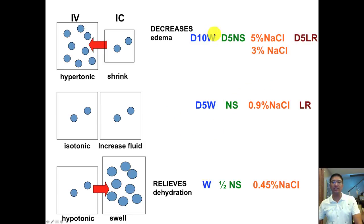If we're going to look at these, all the ones with the D5, D5LR, D5NS, the D5s are all hypertonic, except for what? Except for D5W. Because D5W is isotonic inside the bag, but once it enters the bloodstream, it becomes hypotonic. It provides water to the body.